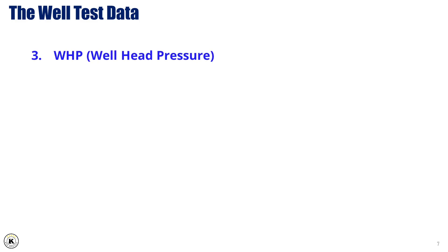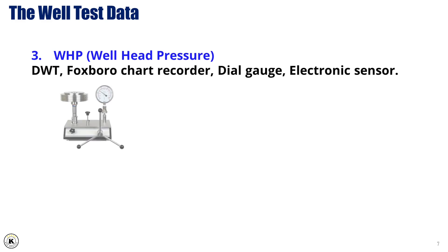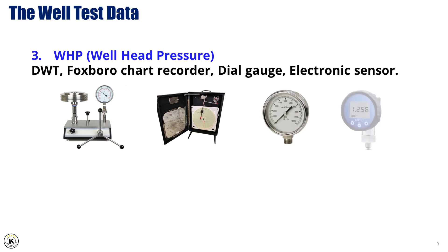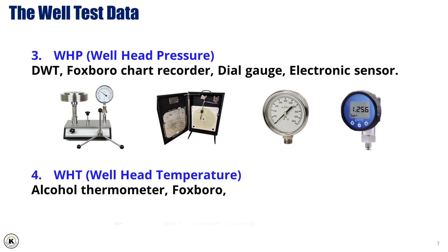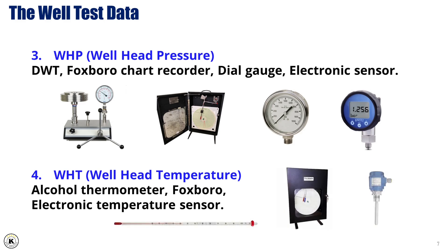3. Wellhead Pressure — to measure the wellhead pressure, tools such as the deadweight tester, Foxborough chart recorder, dial gauge, or electronic sensors are commonly used. These instruments help monitor and record the pressure at the wellhead, ensuring it is within safe operating limits. 4. Wellhead Temperature — typically measured using an alcohol thermometer, Foxborough instruments, or electronic temperature sensors, which monitor the temperature at the wellhead and help identify issues related to temperature fluctuations during testing.